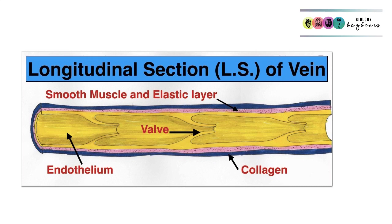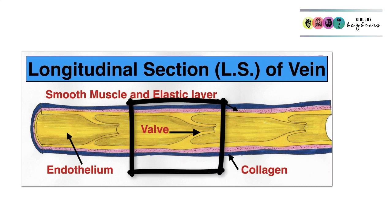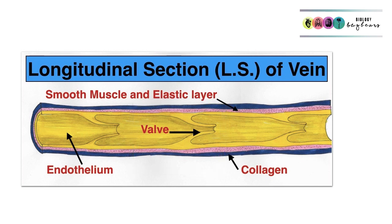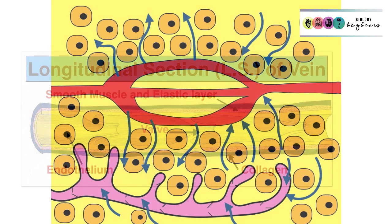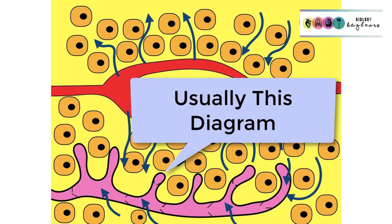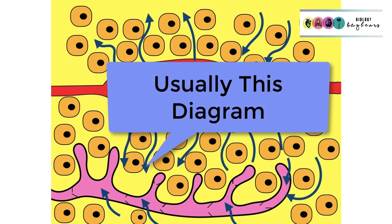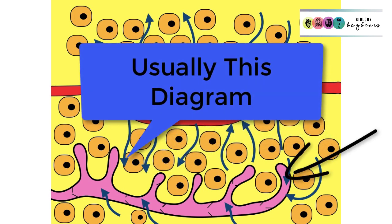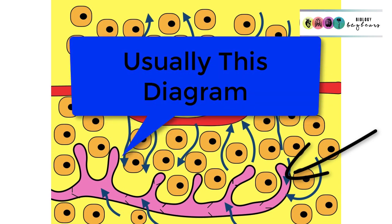Here is a longitudinal section of a vein for comparison. You can see the valves, the muscle layer, the endothelium, and the collagen layer. Lymphatic vessels are very similar to veins — they have valves, just more of them, and they have thinner walls. The diagrams you will encounter in your Leaving Cert are usually of lymphatic capillaries, and they are blind-ending — that's the big giveaway.